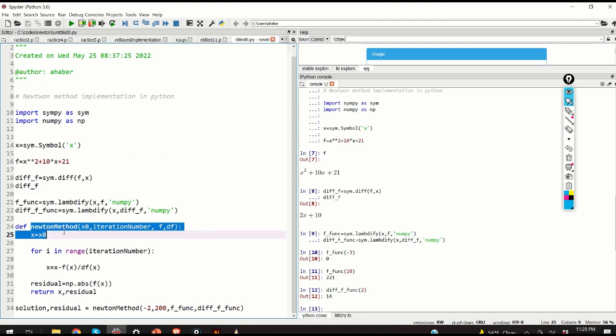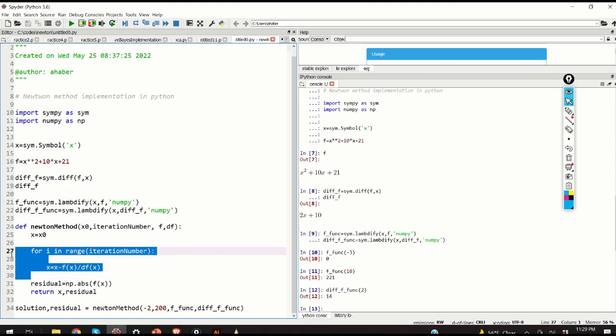Going back to our function, here I specify the initial case. I initialize my x. And I'm iterating here, simply, the Newton's method. I'm iterating the equation. And once I'm done, I basically compute the residual. I evaluate my function f at the approximate solution. This value should be relatively small. And I return my x, my approximate solution, and my residual.